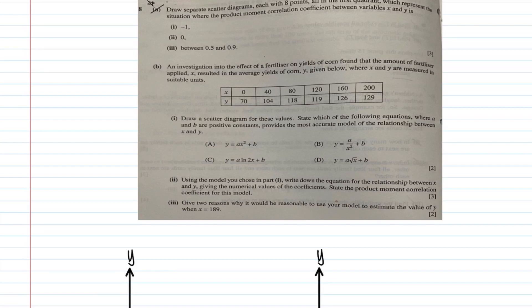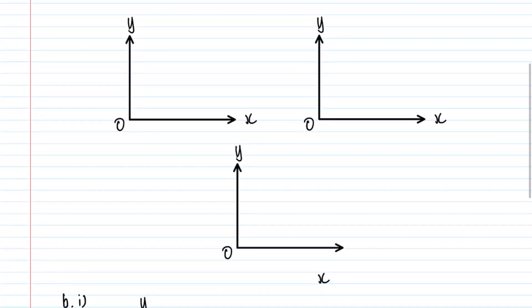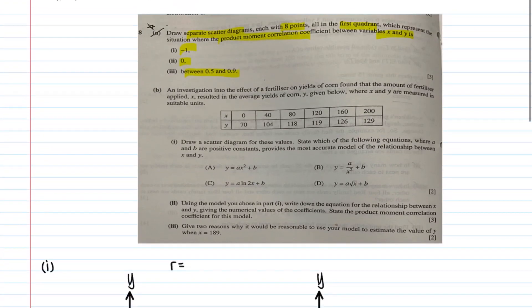Part A asks you to draw separate scatter diagrams each with exactly eight points in the first quadrant, representing situations where the product moment correlation between x and y is minus 1, 0, and between 0.5 and 0.9. When r equals minus 1, there is a perfect negative correlation, meaning as x increases, y decreases.